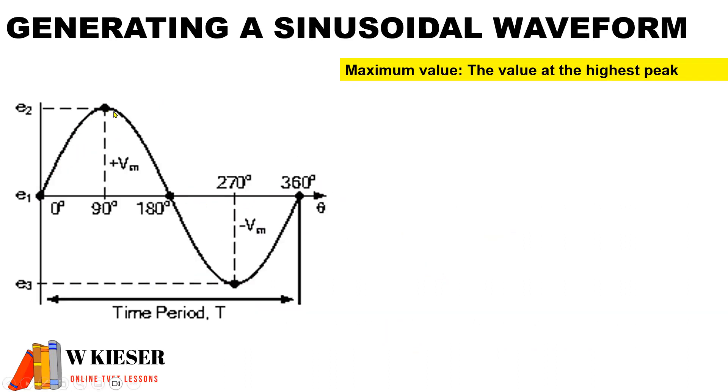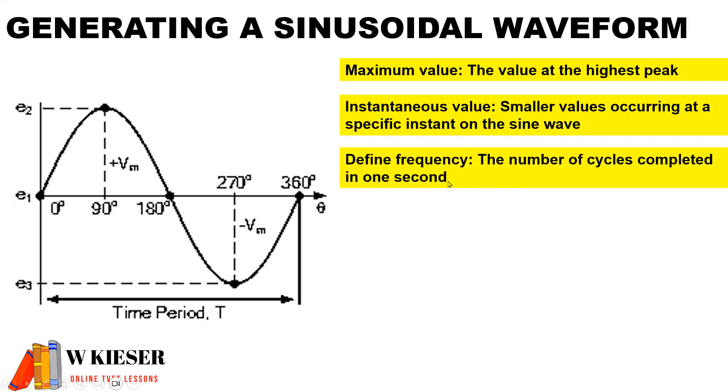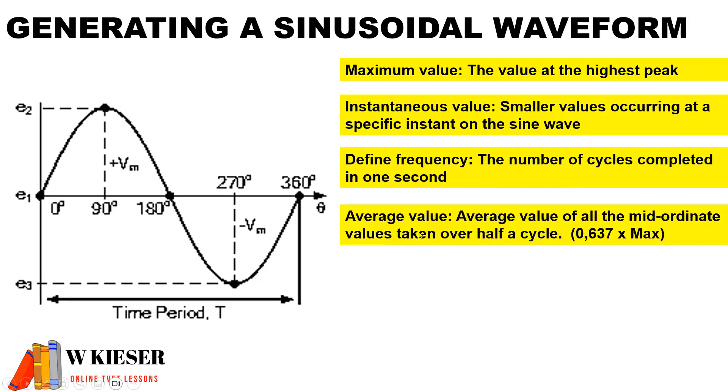For our sine wave, we need to know all the definitions that are related to the sine wave. We have one sine wave here from 0 degrees to 360 degrees, and the time period in which it takes to complete this one waveform. We have maximum value at 90 degrees and maximum value at 270 degrees. To find the maximum value, it is the value at the highest peak of the sine wave. The instantaneous value are the smaller values occurring at specific instants on the sine wave. To define frequency, it is the number of cycles completed in one second. To define the average value, it is the average value of all the midordinate values taken over half a cycle, and to calculate that it's 0.637 multiplied by the maximum value.